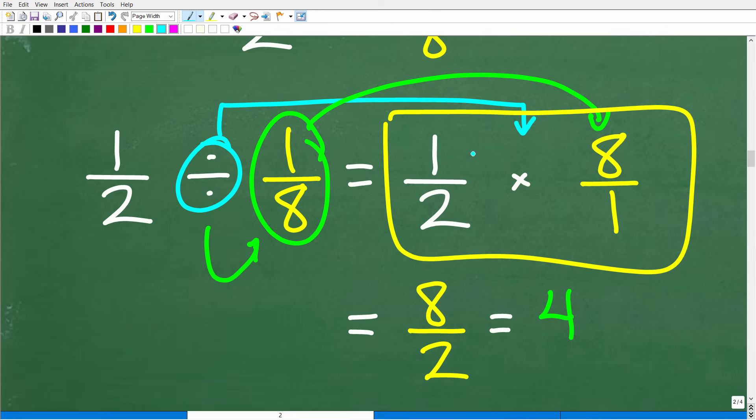This is super easy. All we have to do is multiply the respective numerators and denominators. So we have one half times eight. I'm sorry, one times eight is eight. And two times one is two. Eight divided by two, of course, is four. All right. So a pretty basic problem.